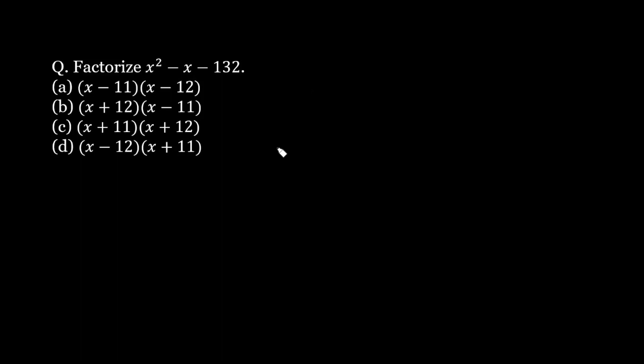Hi everyone, in this video we have to factorize the quadratic expression. The expression is given as x squared minus x minus 132. We have x squared minus x minus 132 and we have to factorize this. Now how can we factorize this? So what is the strategy here?